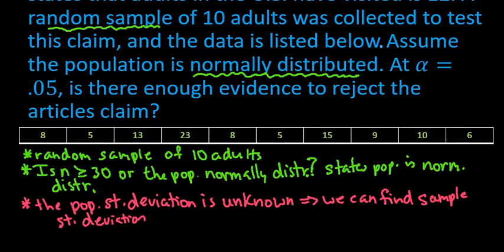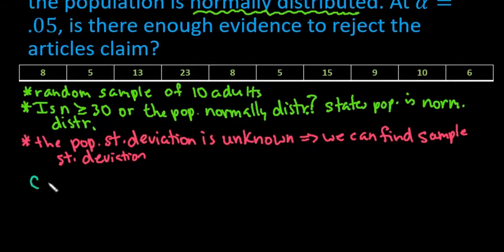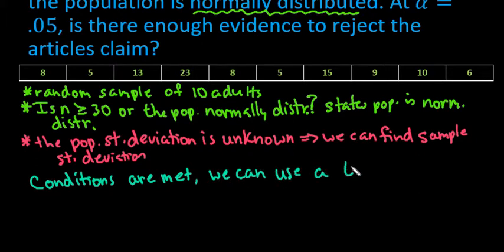Now that we've established that the conditions are met, we can use a t-test for the mean. Once you've established what kind of hypothesis test you are doing, the next step is to set up our null and our alternative hypotheses. Remember that the null always has to contain a statement of equality and the alternative always has to contain a statement of inequality.